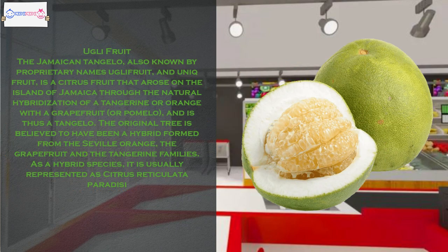The Jamaican tangelo, also known by proprietary names Ugli fruit and unique fruit, is a citrus fruit that arose on the island of Jamaica through the natural hybridization of a tangerine or orange with a grapefruit or pomelo, and is thus a tangelo. The original tree is believed to have been a hybrid formed from the Seville orange, the grapefruit and the tangerine families. As a hybrid species, it is usually represented as Citrus reticulata × paradisi.